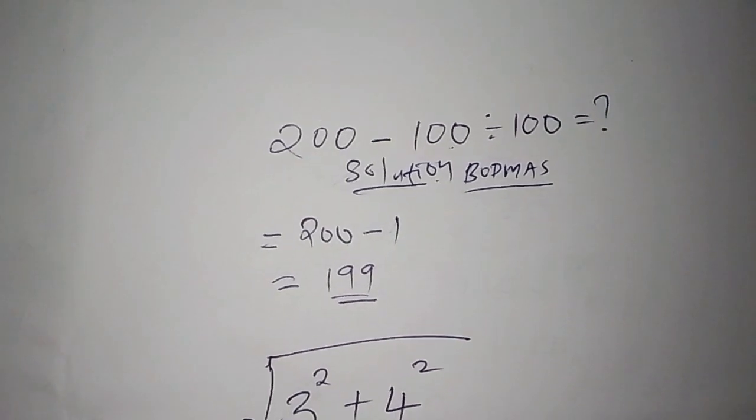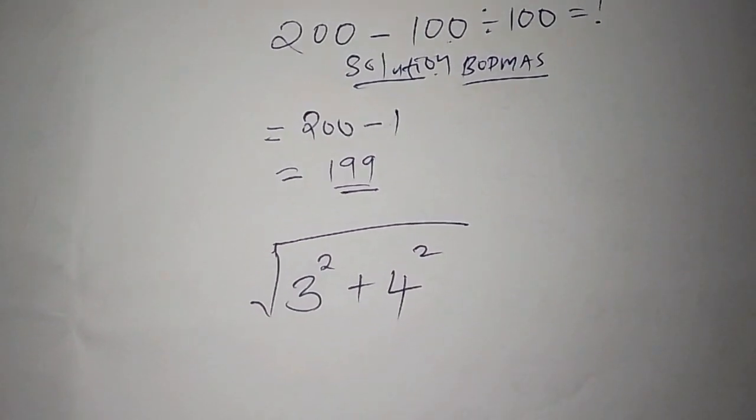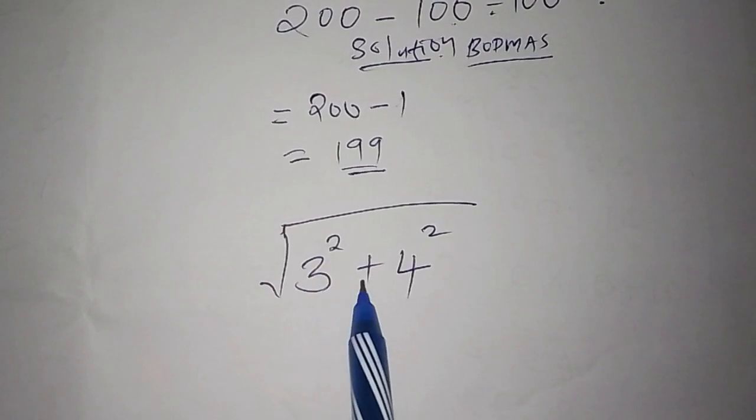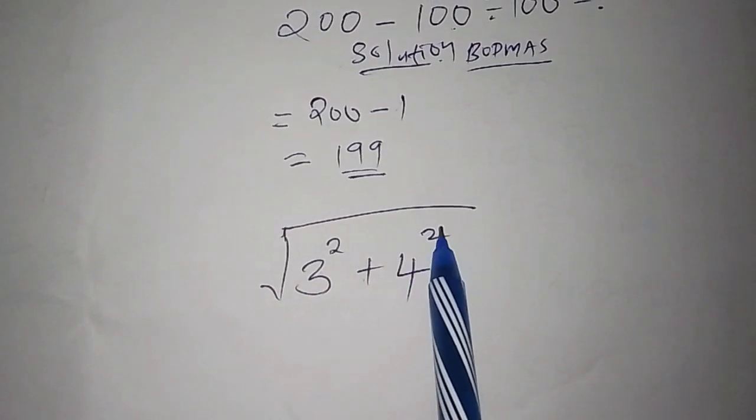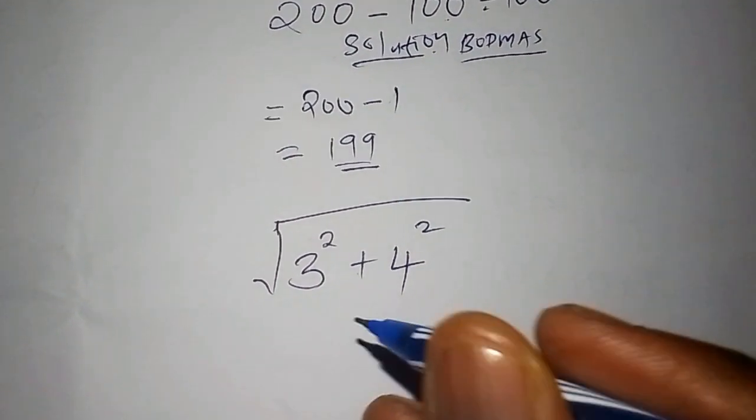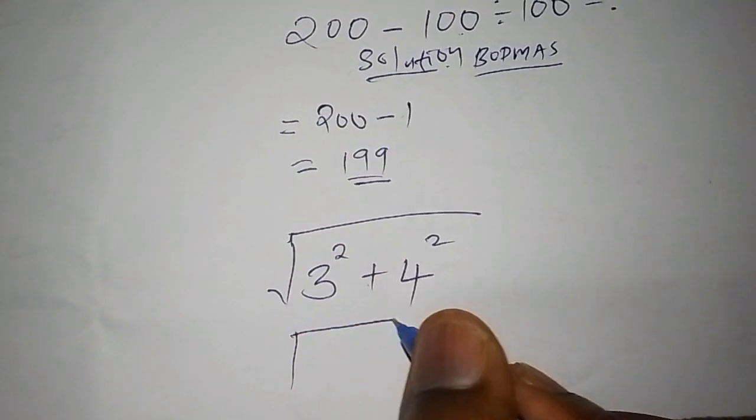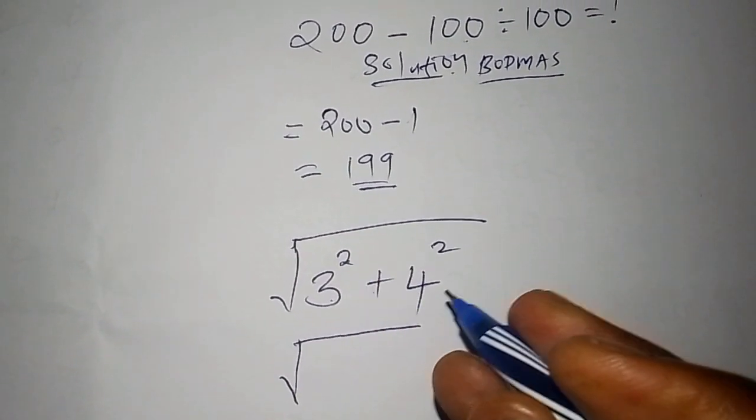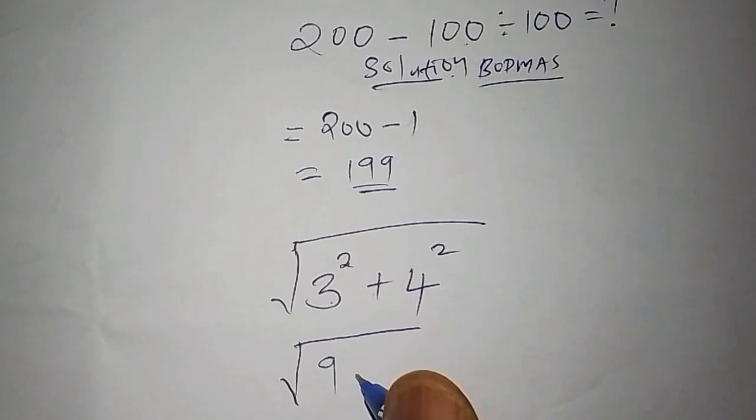So here we are going to work out the square root of 3 squared, which is 9, add to 4 squared, which is 16.